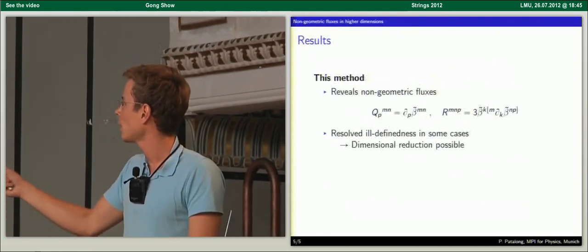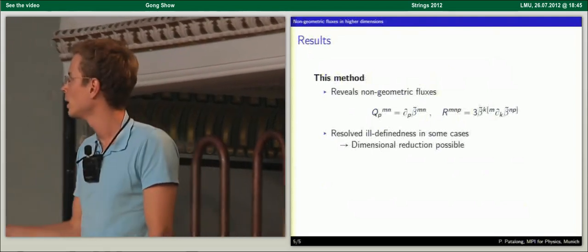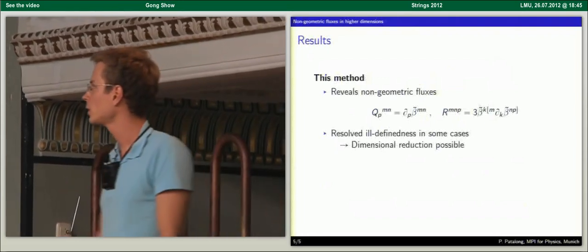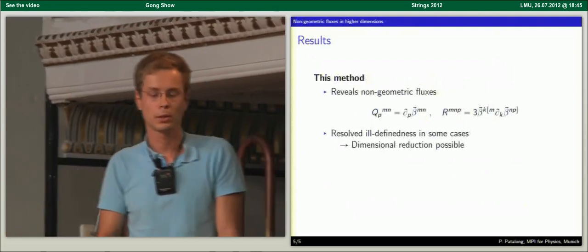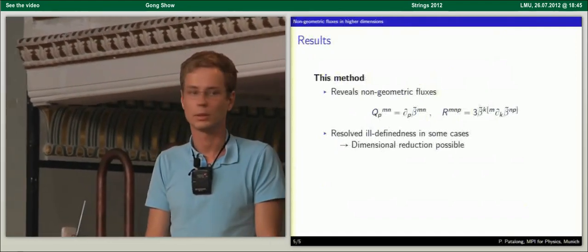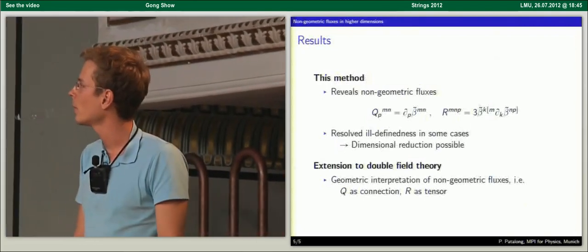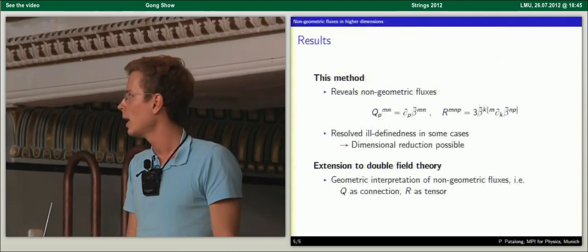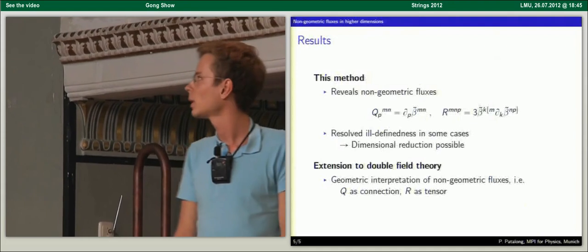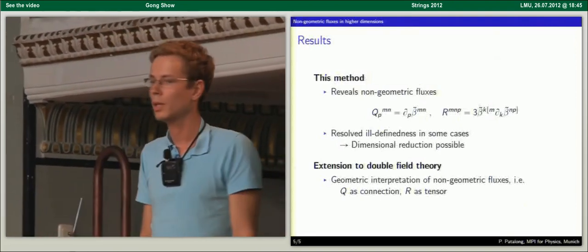R-flux turns out to be a little more complicated, appearing as a squared term like H-flux. In some cases we were able to show that the ill-definedness coming from a non-geometric background can be resolved such that a dimensional reduction is possible. If we compare the potential terms from these non-geometric fluxes, we find exactly the right thing seen in four dimensions. Furthermore, we lifted this procedure to a double field theoretic setup where everything depends on double coordinates, getting extended definitions of Q and R. Q appears as a kind of connection term and R remains an ordinary tensor in double space.